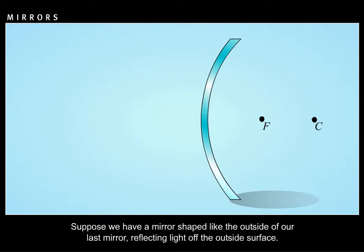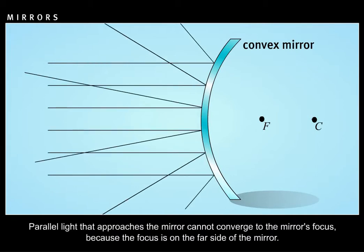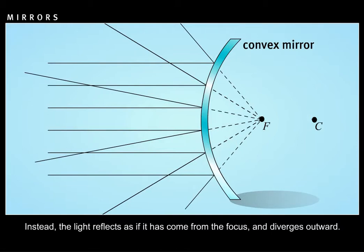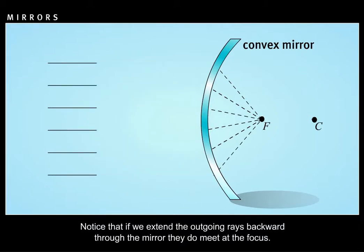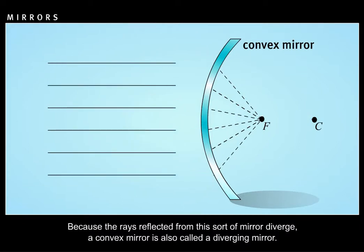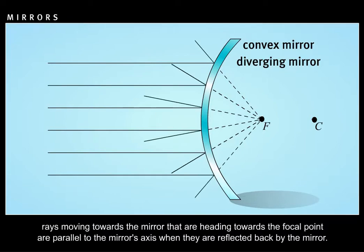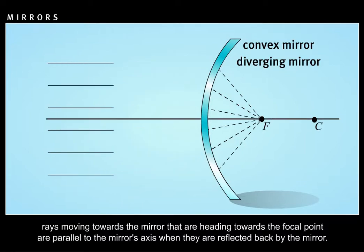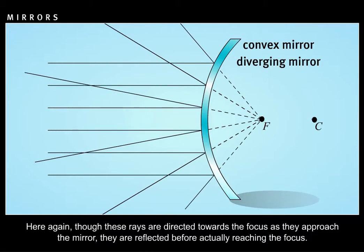Suppose we have a mirror shaped like the outside of our last mirror, reflecting light off the outside surface — such a mirror is known as a convex mirror. Parallel light that approaches the mirror cannot converge to the mirror's focus because the focus is on the far side of the mirror. Instead, the light reflects as if it has come from the focus and diverges outward. If we extend the outgoing rays backward through the mirror, they do meet at the focus. Because the rays reflected from this sort of mirror diverge, a convex mirror is also called a diverging mirror. Rays moving towards the mirror that are heading towards the focal point are reflected parallel to the mirror's axis, though they are reflected before actually reaching the focus.